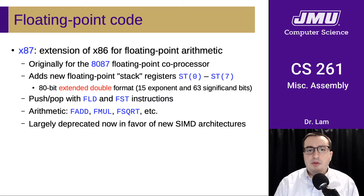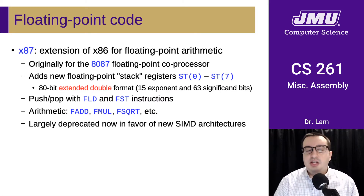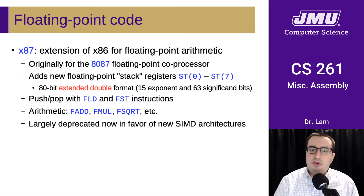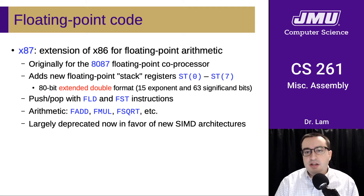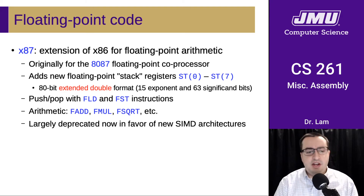The original legacy instruction set for manipulating floating point numbers is called x87. It's an extension of x86 for floating point arithmetic, originally designed for a particular coprocessor. It added new registers that were supposed to be used like a stack, working in a weird extended double format that used 80 bits — though you could also treat it as not a stack.